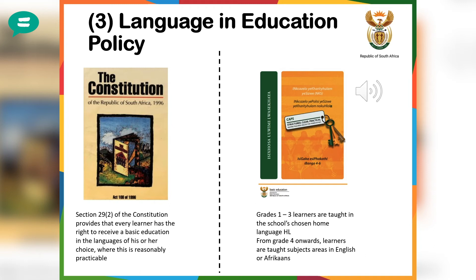The second key document is our Language in Education Policy, which stipulates that from Grade 1 to 3, learners can be taught in the home language chosen by the school. From Grade 4 onwards, learners are then taught subject areas in English. So for example, I learn to read in my home language for the first three years of schooling, and then from Grade 4, when doing specific subject areas like maths, science, and social skills, those are taught in English.